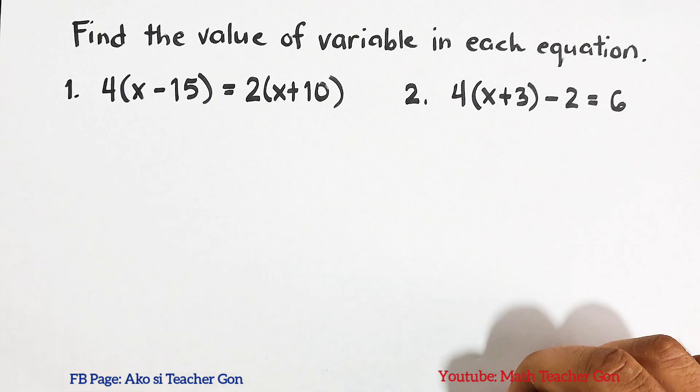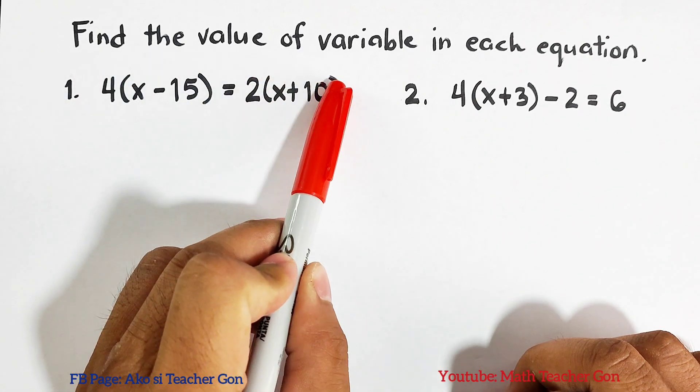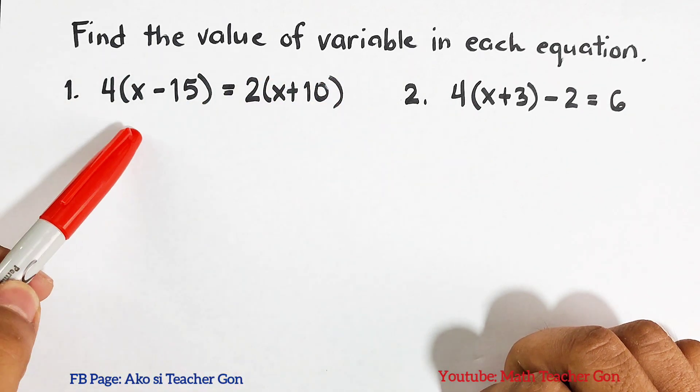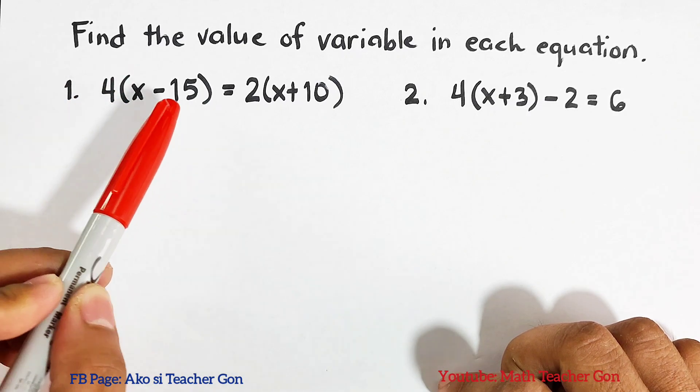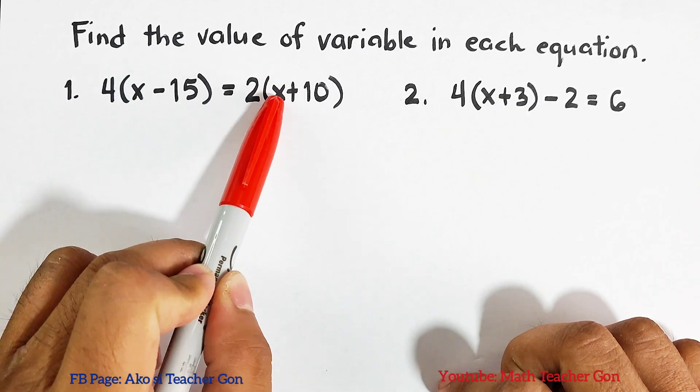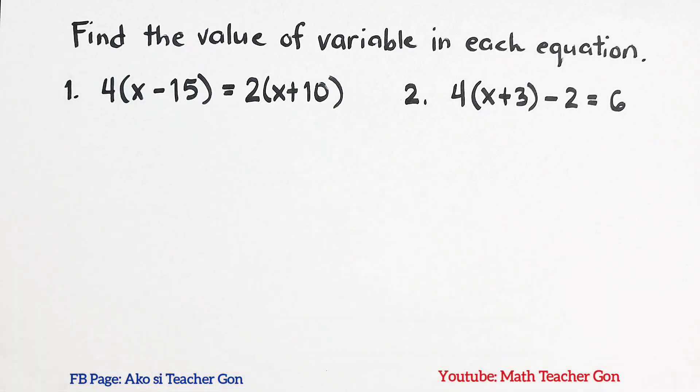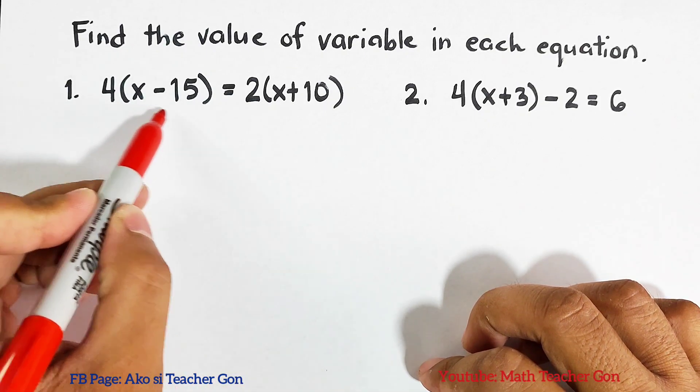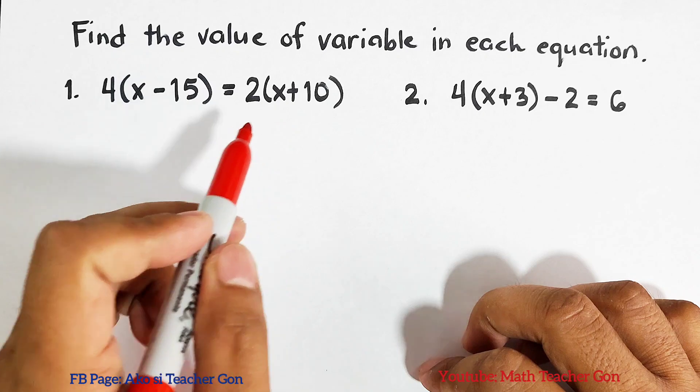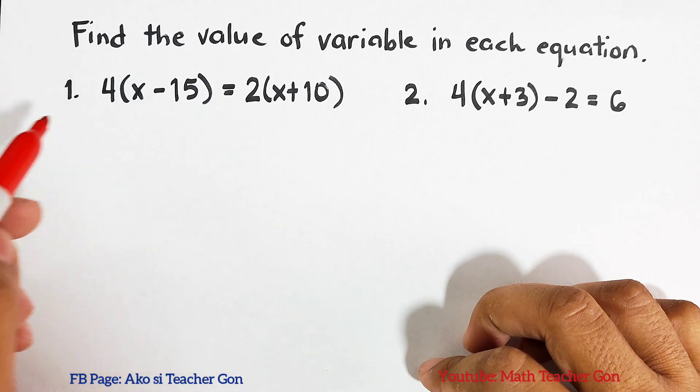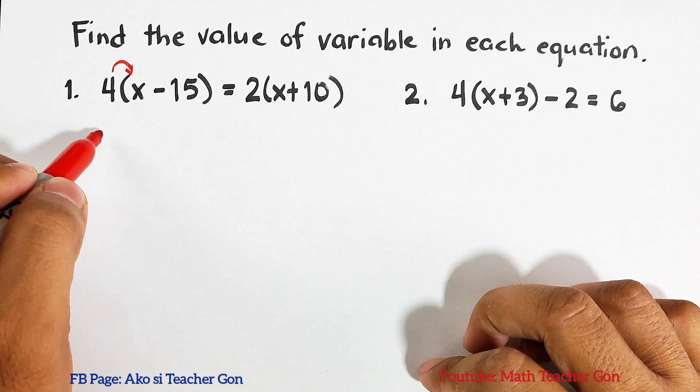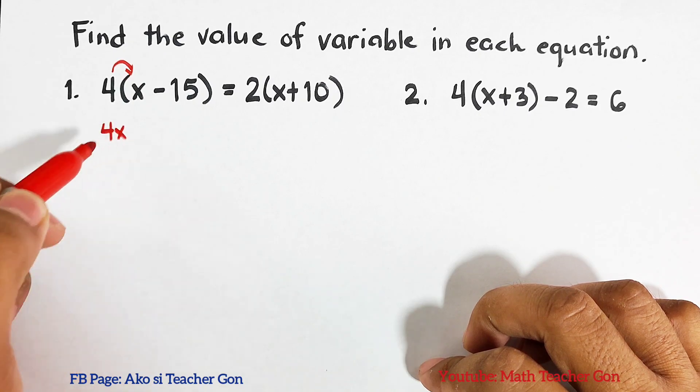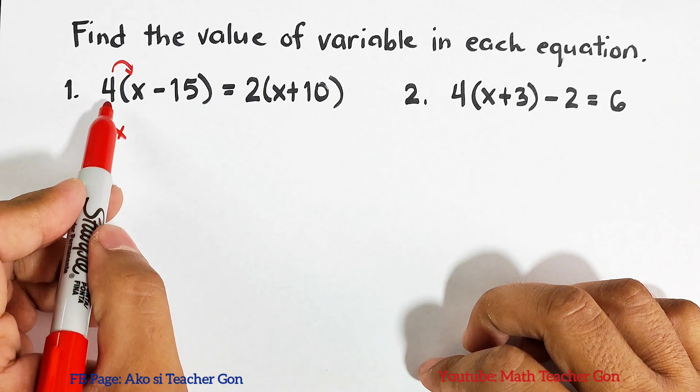Let's try number one. Find the value of a variable in each equation. In number one we are given 4(x - 15) = 2(x + 10). As you can see, on both sides of the equation we will use here the distributive property. First, let's multiply: 4 times x, that would be 4x. Next, for negative 15 we have 4 times negative 15, that is negative 60.